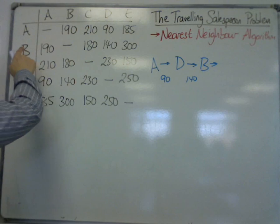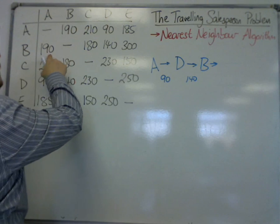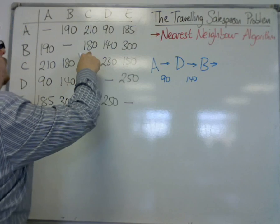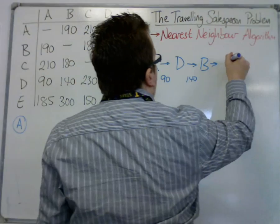Now from B, we've already visited A, we've visited D, so the next shortest place will be C, so that's C for 180.